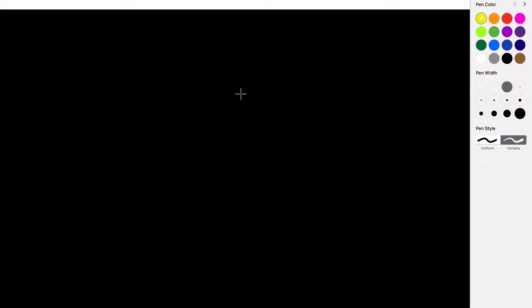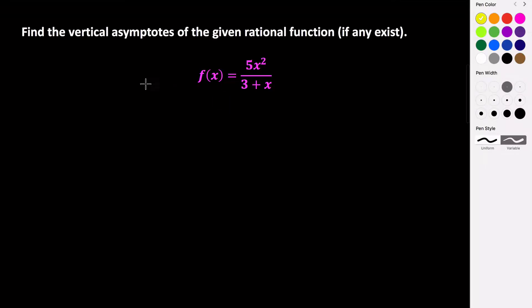In this video we're going to look at how to find the vertical asymptotes of a given rational function. So let's take a look at a few examples. If we're given the rational function f of x equals 5x squared divided by 3 plus x, we want to find all of the vertical asymptotes, if they exist, for this function.